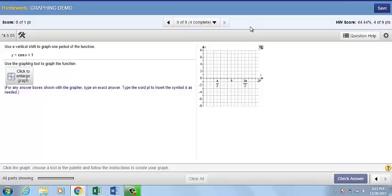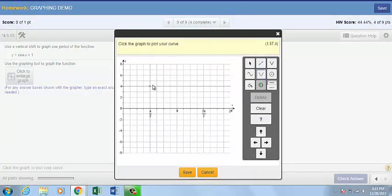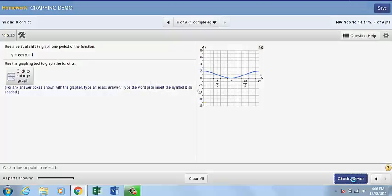On our last question, we are looking at a cosine graph. Choose the cosine tool. Choose the cosine tool and click to plot. The period of the graph is still 2 pi. The vertical shift is, however, 1. When you are finished, click save and check your work.